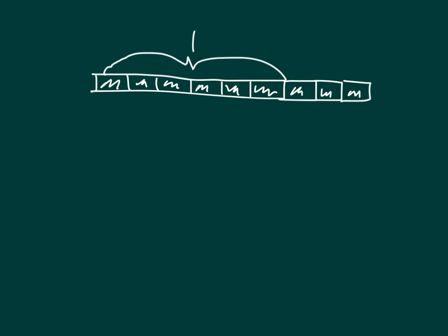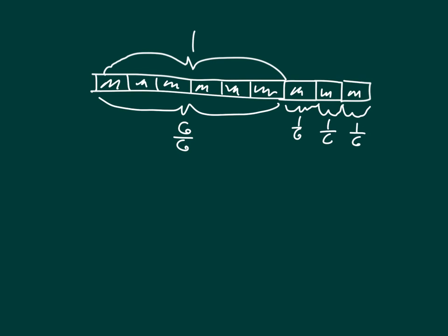What is being shown here? Well, let's look at the whole — one, two, three, four, five, six. How many sixths is that? Six-sixths. And then these additional parts are also sixths — three more sixths. So I could express that as six-sixths plus three-sixths equals nine-sixths.